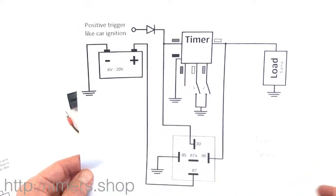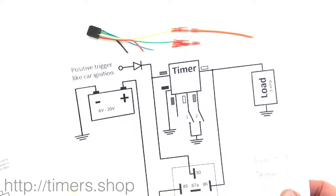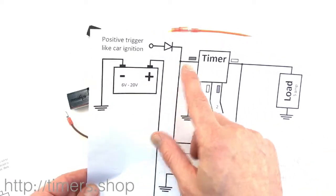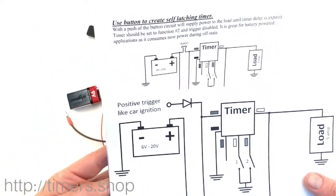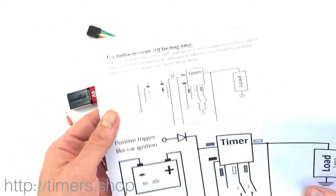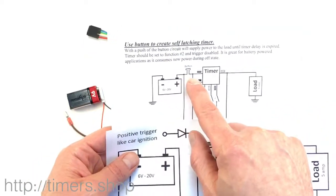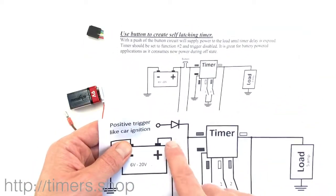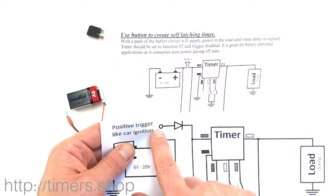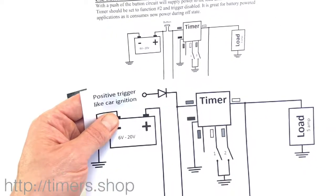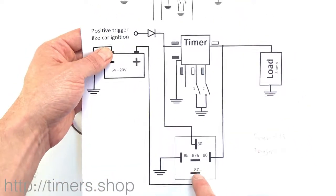Basically you would connect a diode. If we compare those two circuits, you'll find that here we have a button that connects the power to the timer. Here, instead of the button, we have an external source. We need a diode because we don't want the power from our power source to feed back into the ignition.